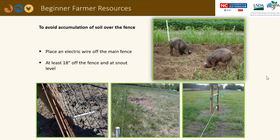Electric wires may be offset from the fence to keep hogs from pushing soil onto the wire. To avoid the accumulation of soil on the fence, place an electric wire off the main fence at least 18 inches out from the fence and at snout level.